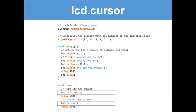`lcd.cursor()` is very similar to blink — it turns the cursor on and off. The difference is that instead of filling in the whole box, it just shows a small underline cursor at the bottom of the character cell rather than the full block. The demonstration shows this effect.